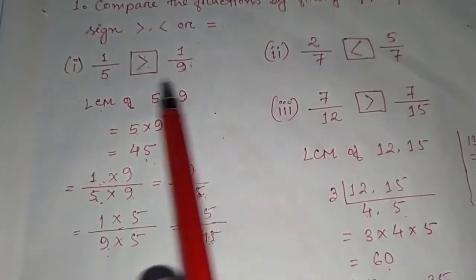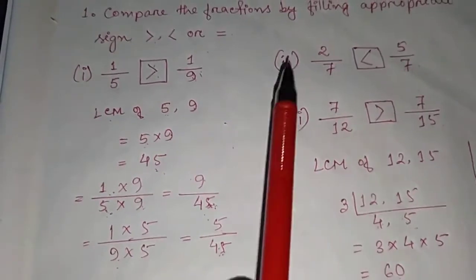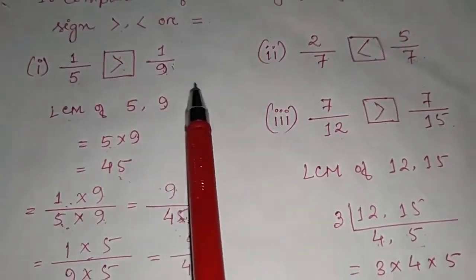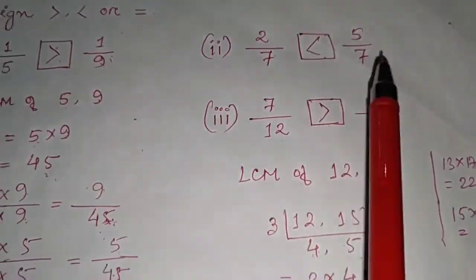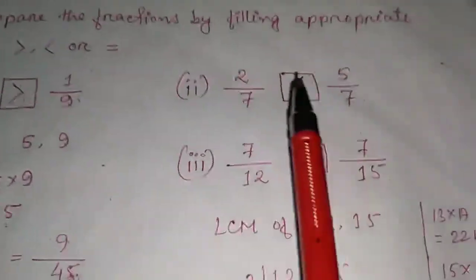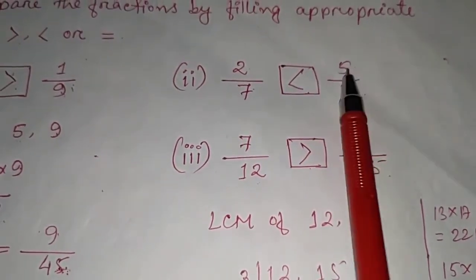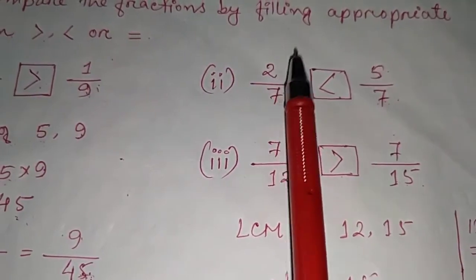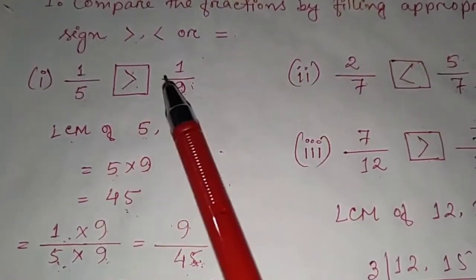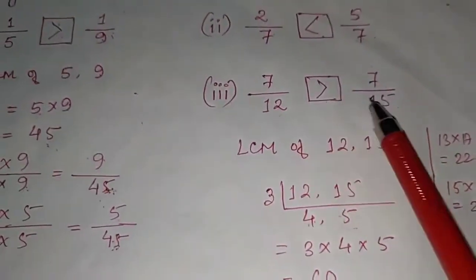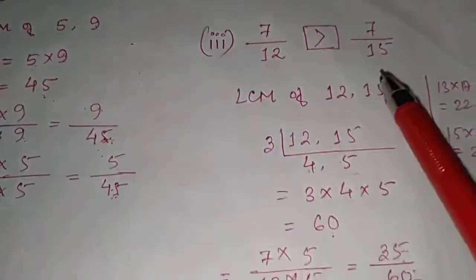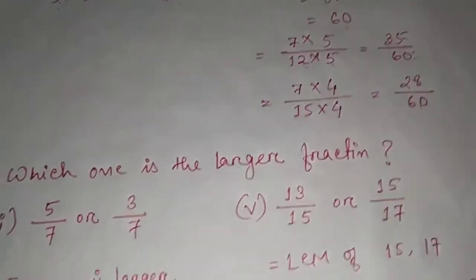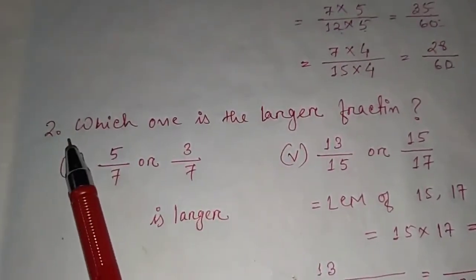In question 1, I've done three sums. The rest are similar: if denominators are the same, just compare numerators — bigger numerator means bigger fraction. If denominators are different, find the LCM and convert, then compare numerators.